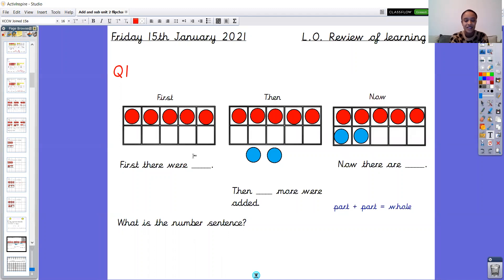Brilliant, okay so hopefully you have got first there were five. You can see there are five counters in that first tens frame. Then two more were added. One, two, the two blue ones. Now there are, well we're not going to count them all together. We already know that we've got five. We're going to put the five in our heads. We're going to count on from five, six, seven. Brilliant.